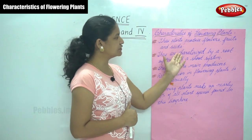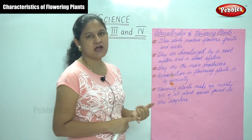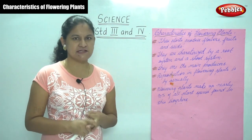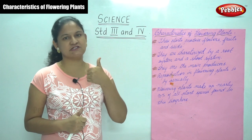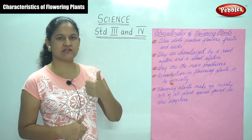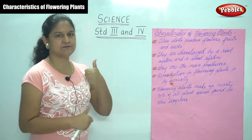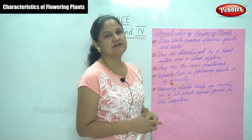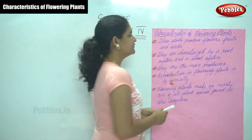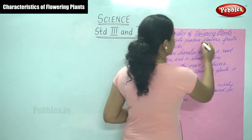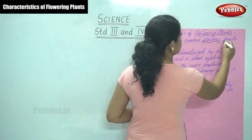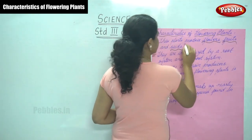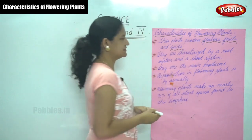The first characteristic of a flowering plant is that these plants produce flowers, fruits, and seeds.